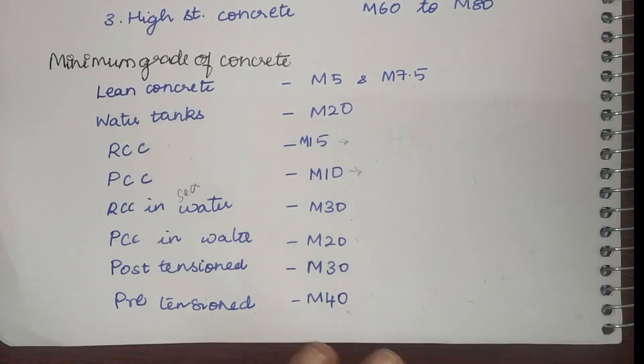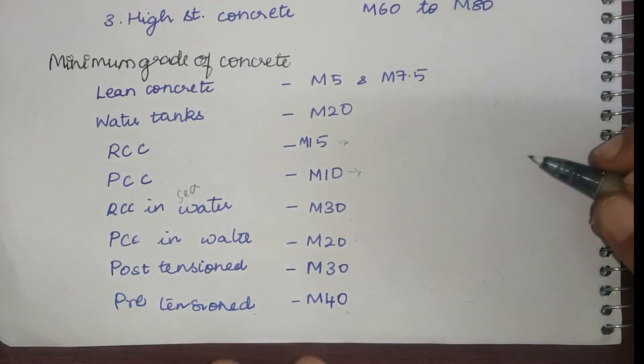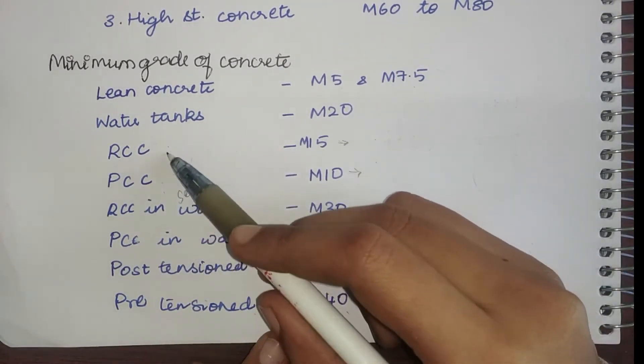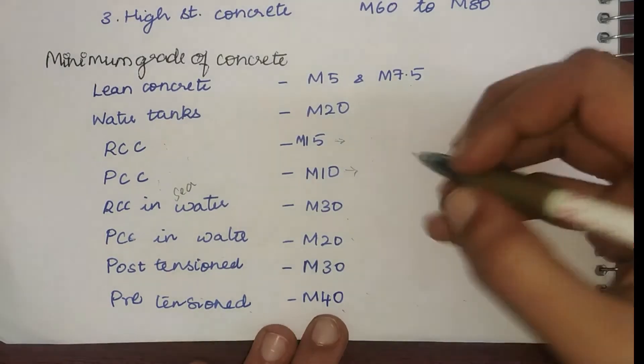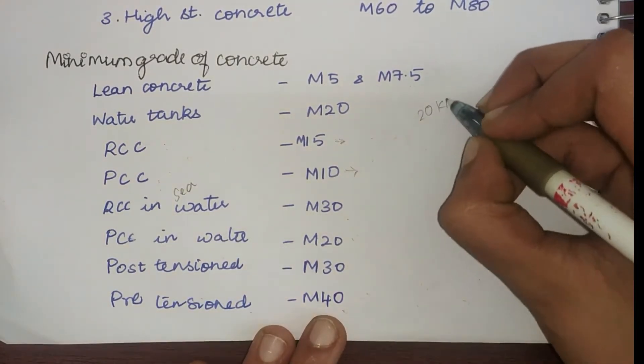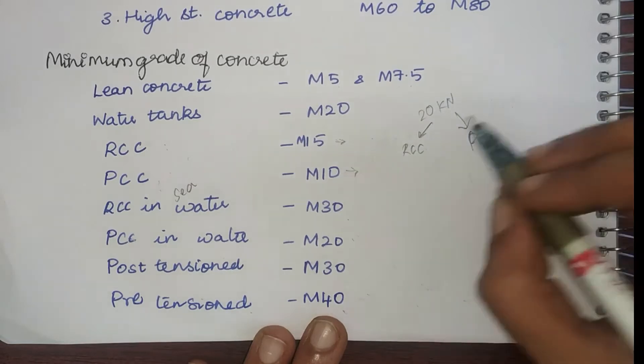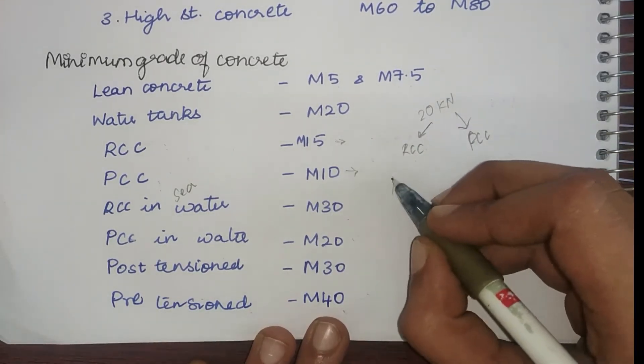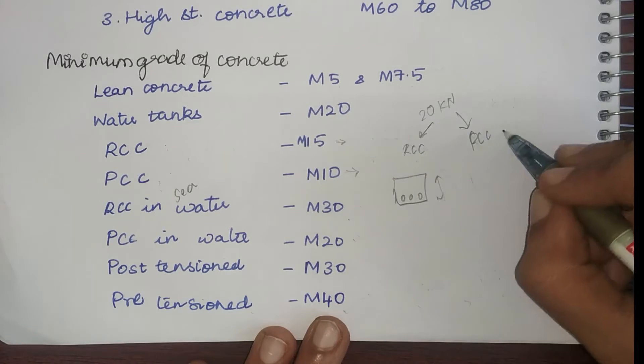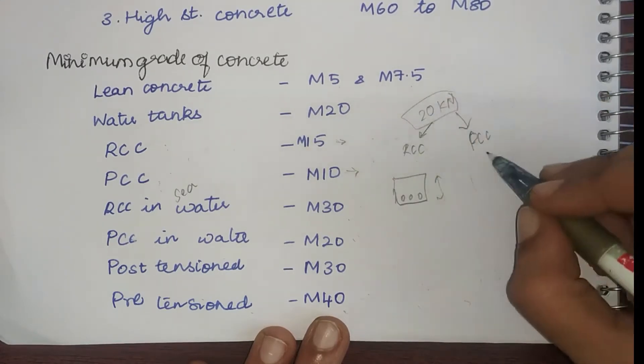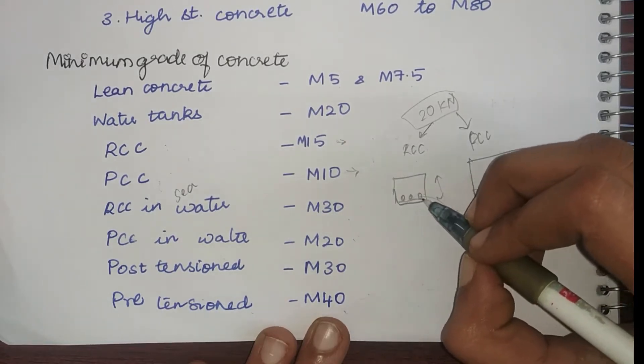You can see that for RCC the minimum grade of concrete is higher, whereas for PCC the minimum grade of concrete is less. But we know that RCC is much stronger than PCC because we have given reinforcements. If RCC is much stronger than PCC, shouldn't PCC have the higher grade of concrete? But why is it given like this? Say for a structure I have to take 20 kilonewtons. If I am going to design it in RCC, since I am providing steel, my depth of the member and size of my member reduces, whereas when I am going to design for the same load in PCC, I have to provide a bigger amount of section.